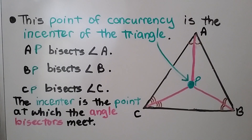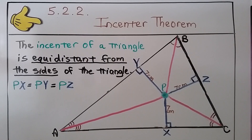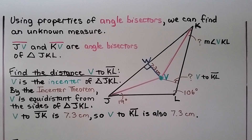Remember: the point of concurrency of the angle bisectors is the in-center of the triangle. An inscribed circle is a circle placed within a polygon touching each side, and the in-center is the center of that circle. The in-center is equidistant from the sides of the triangle. We can use properties of angle bisectors to find unknown measures, and video 1.3 is linked in the description if you want to review how to construct an angle bisector.